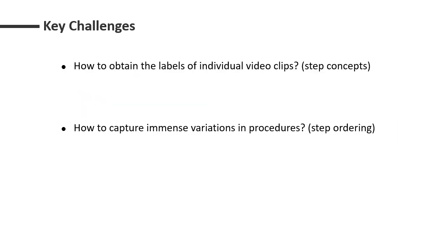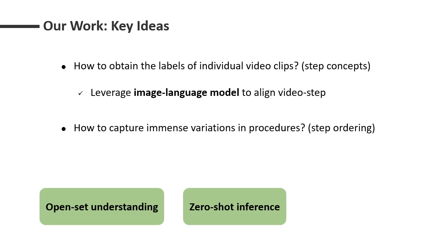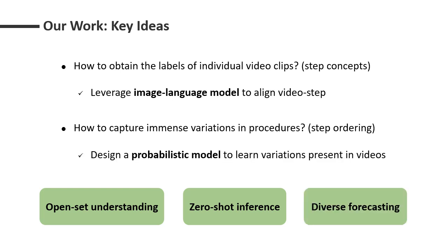To learn task procedures, there are two main challenges. The first challenge is how to obtain labels for step concepts. The second challenge is how to learn step ordering and their variations. Our key idea is to leverage the pre-trained image-language model to align video clips and the step concepts, enabling open vocabulary understanding and zero-shot inference for step classification. For the second challenge, we design a diffusion model to learn step ordering and the variations in procedures, and our model is able to forecast diverse predictions for the next step.